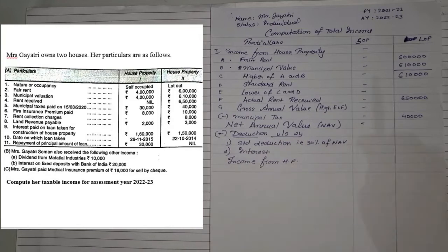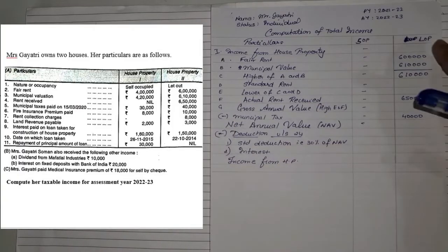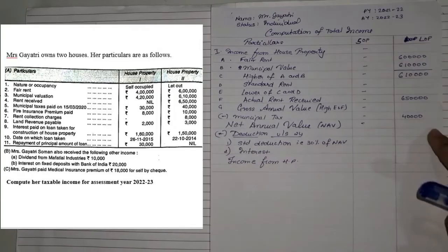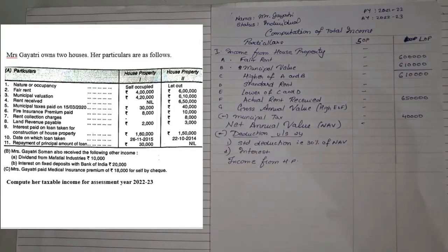Now this is a sum where the entire thing is based on LOP, so there is no vacant let-out — this is purely let-out. The only difference between let-out and VLOP — we'll finish this part first, and then I'll tell you what's the only difference between both the properties, so if the question comes based on VLOP, how you will have to formulate that.